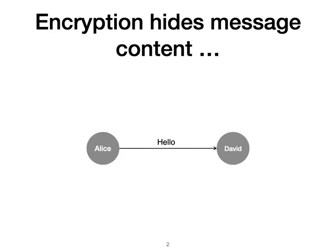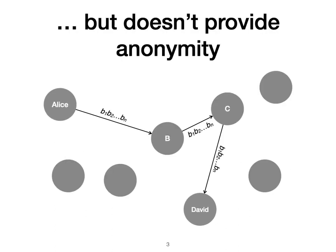Suppose that Alice wants to send a message to David so that no one can tell that she's communicating with David. Encryption by itself is not going to solve the problem because, well, she can encrypt her message so that no one can tell what it is she's sending to David. But an adversary that can view the network traffic can see the same sequence of bits going out of Alice's computer and going into David's, and so can connect the fact that Alice is communicating with David.